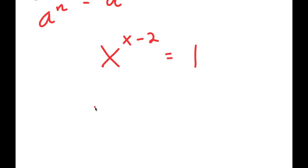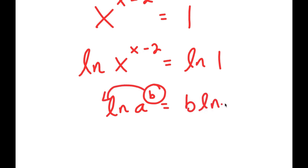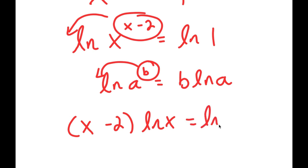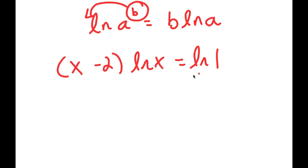Now I can take the natural log on both sides, so I have ln of x to the power of x minus 2 equals ln of 1. An important property of logarithms is that ln of a to the power of b equals b times ln a — I can move the exponent to the front. This is very useful because x is an exponent and hard to solve for directly, but now I can bring it to the front. So I get x minus 2 times ln x equals ln 1, and ln of 1 equals 0, so x minus 2 times ln x equals 0.